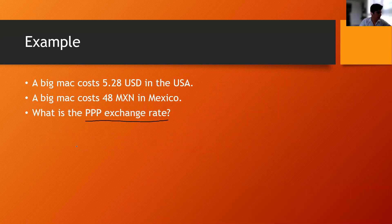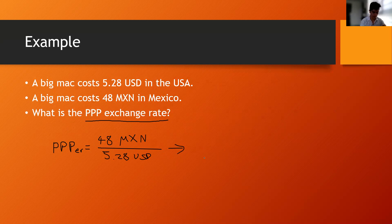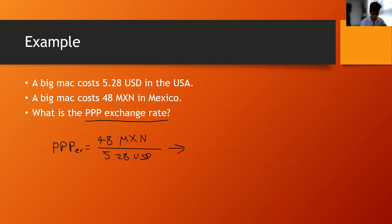Let's do the calculation. So the PPP exchange rate will be the home price over the foreign price. So it will be 48 pesos over 5.28 dollars. And the answer to this is, let me use my calculator, so I don't have the answer in the presentation. It will be 48 over 5.28, 9.0909.